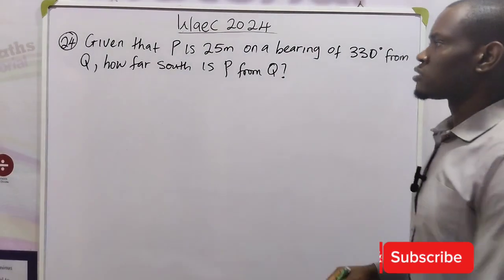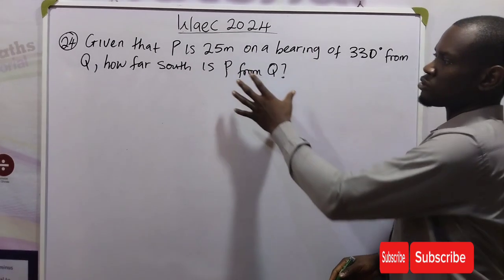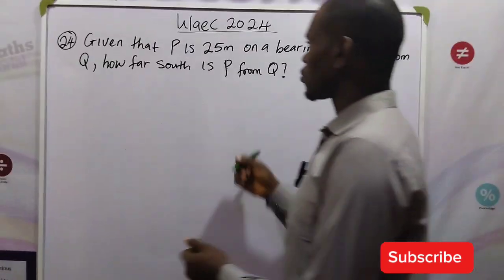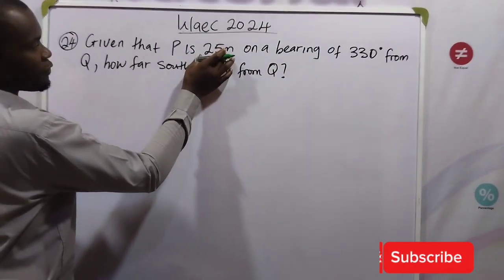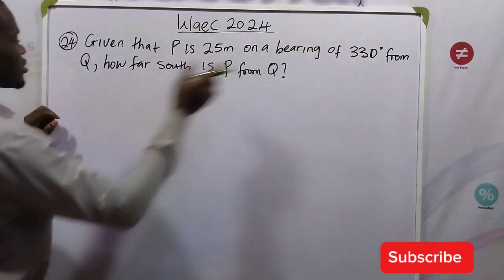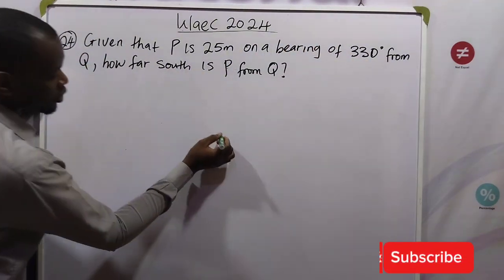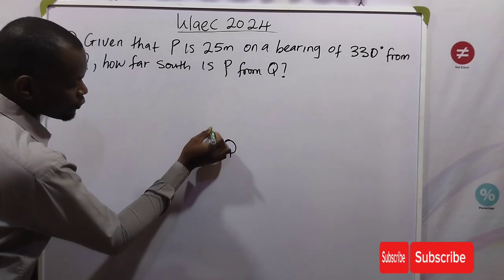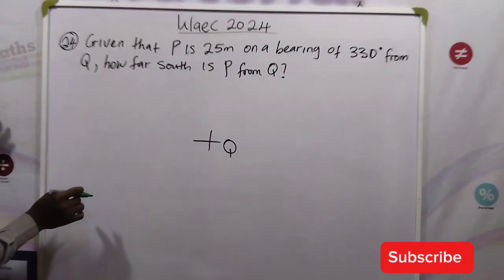This is a bearing problem. Let's represent the information using a diagram. We have P which is 25 meters on a bearing of 330 degrees from Q. So we're going to start the movement from a position at Q.